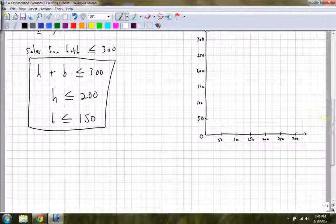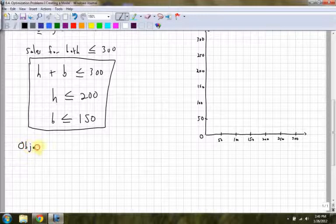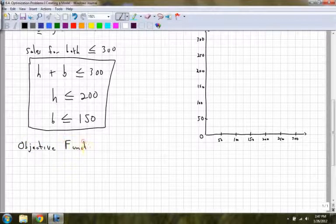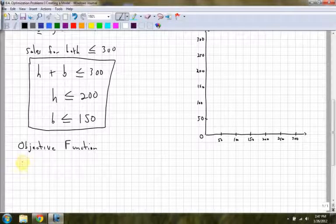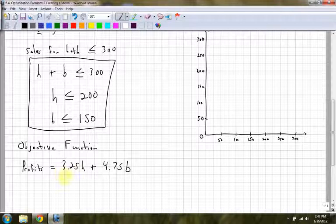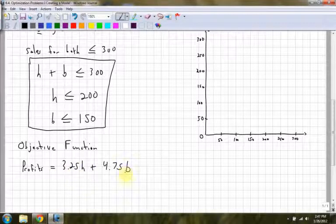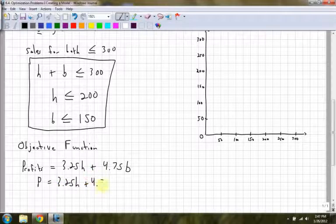The question goes on and says hot dogs are sold for $3.25 and hamburgers are sold for $4.75. So the next thing you want to do is have your objective function, which isn't going to be used in the graph but it is going to be used in next chapter because we're going to be trying to optimize this objective function. For my profits, that's going to be equal to $3.25 for every hot dog that's sold plus $4.75 for every burger. So money values are kept separate from the number of hot dogs or the number of burgers. We could just write P equals $3.25H plus $4.75B.